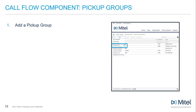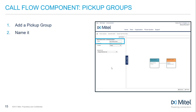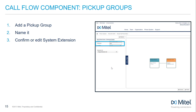Pickup groups are used in group environments, allowing users to answer any ringing phone in a group using soft keys, programming keys, or star commands. Add a pickup group from the drop-down and name it something unique. Confirm that the automatically assigned system extension is okay for use; if not, edit it to a valid, unused extension.